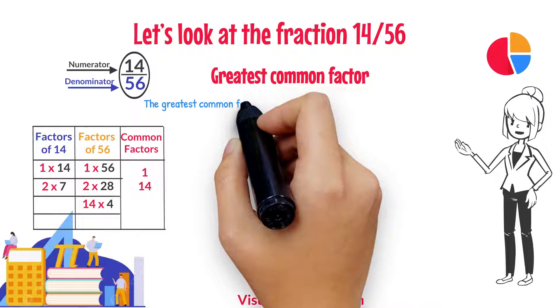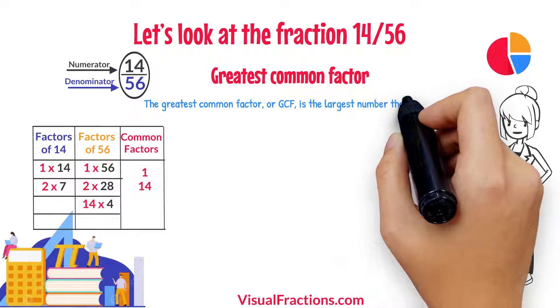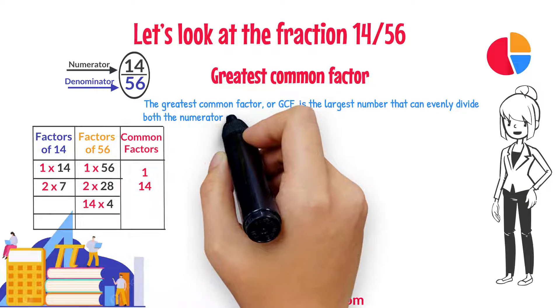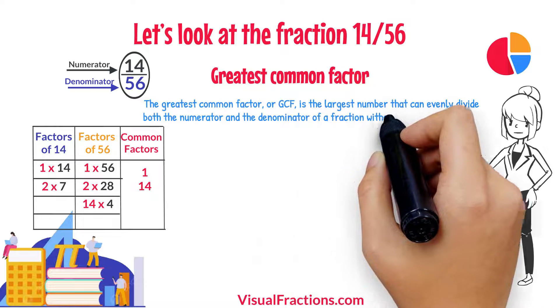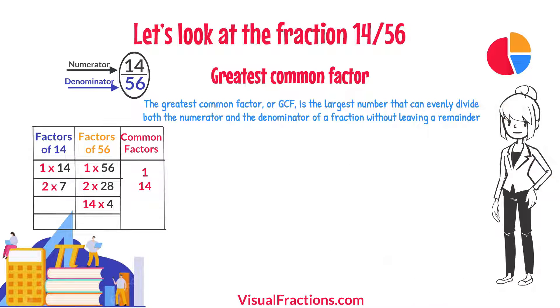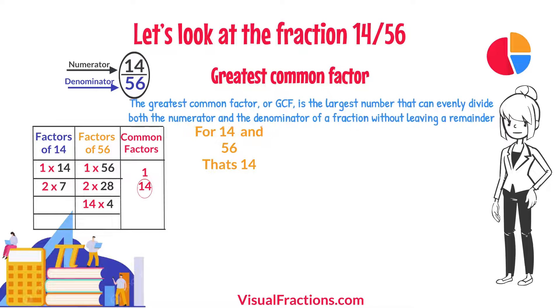The greatest common factor, or GCF, is the largest number that can evenly divide both the numerator and the denominator of a fraction without leaving a remainder. For 14 and 56, that's 14.